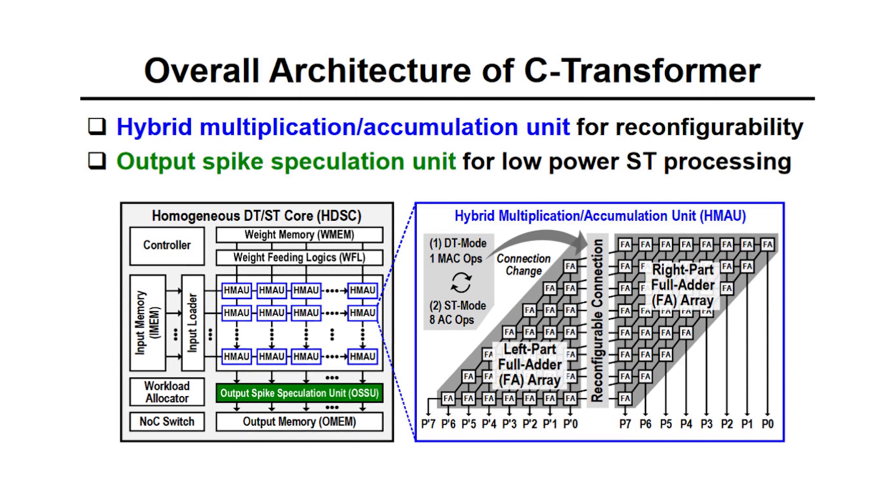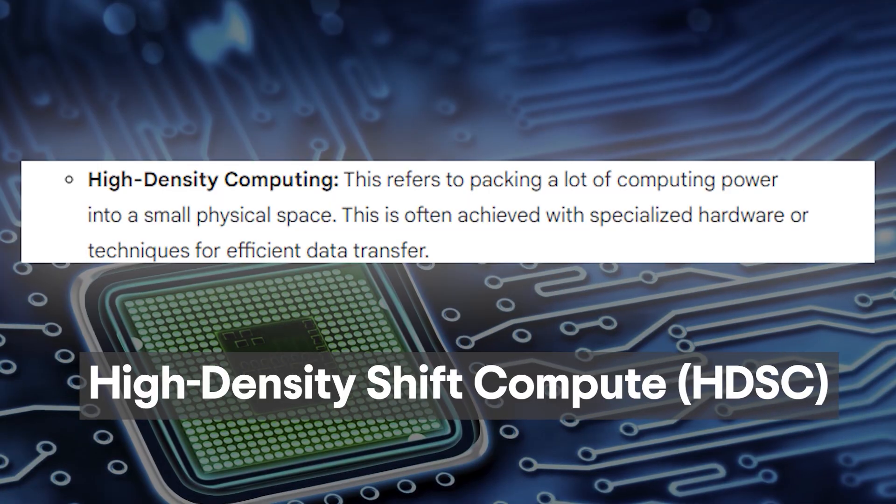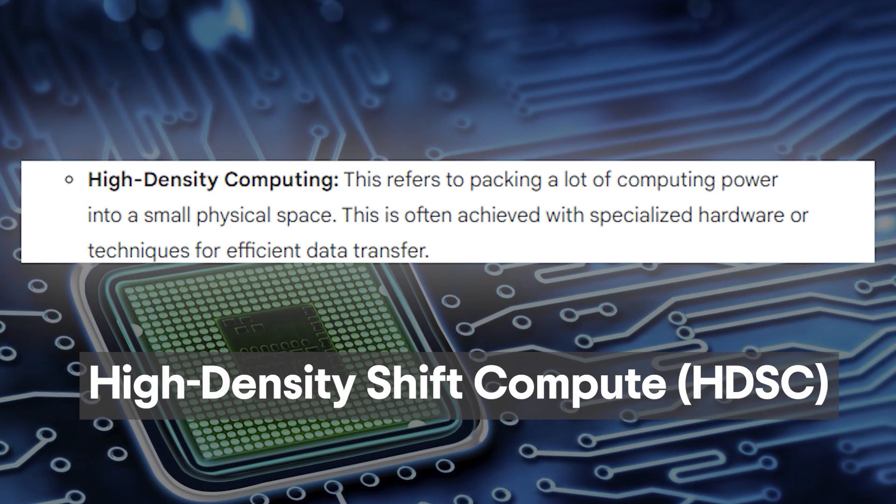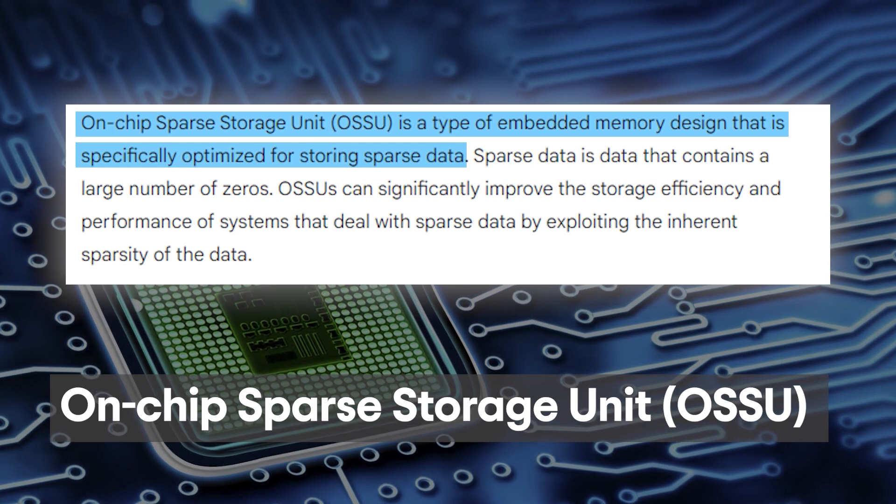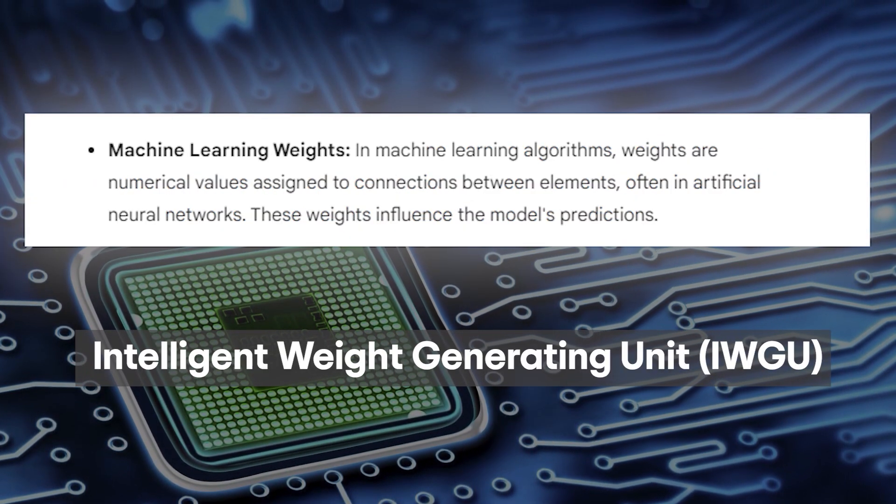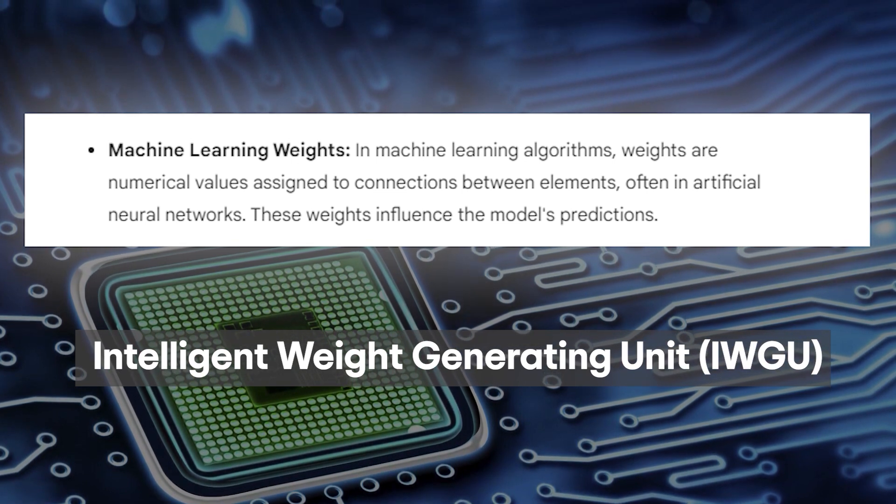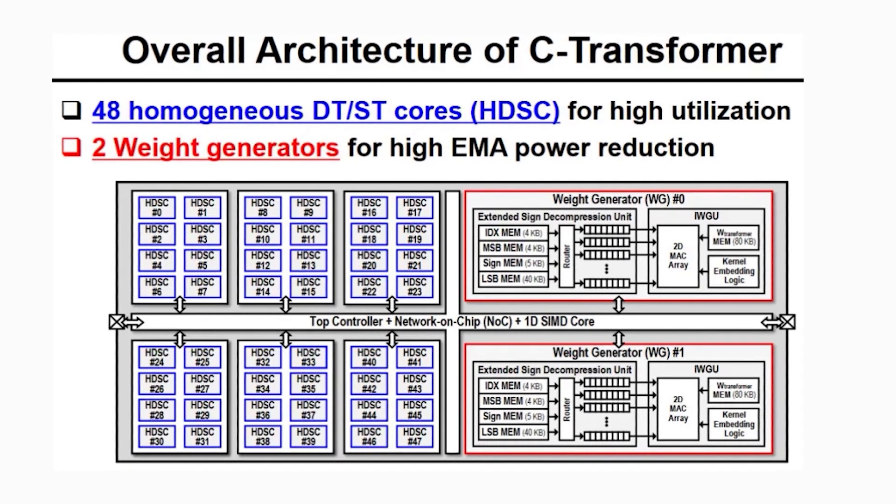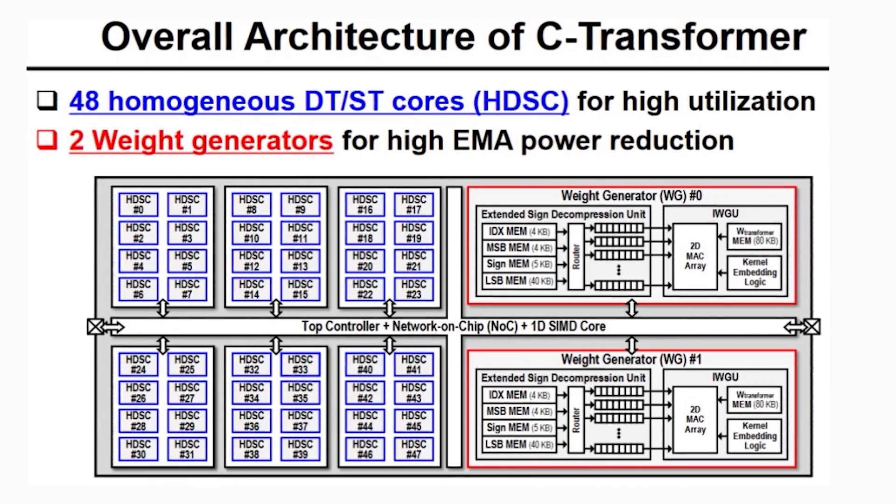The C-Transformer AI chip achieves remarkable efficiency through its innovative architecture, which includes high-density shift compute or HDSC for optimizing computation, on-chip sparse storage unit or OSSU for efficient storage use, and intelligent weight generating unit or IWGU for cost-effective and fast training. This design allows for sustainable energy savings while maintaining performance and accuracy in AI tasks.